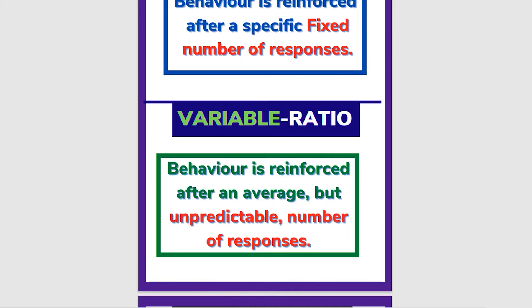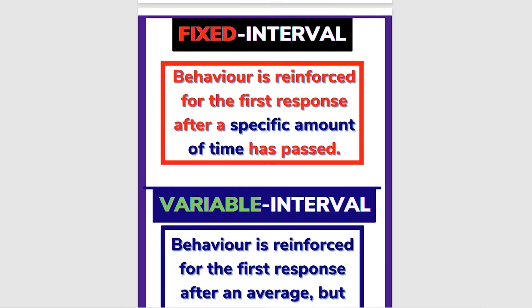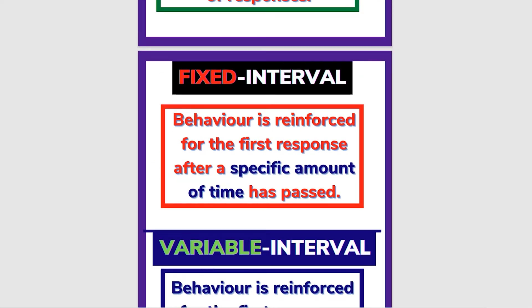If we are using the variable ratio schedule, we will give rewards unpredictably. For example with a dog, we give a reward sometimes on the 2nd response, sometimes on the 3rd — it varies. The next schedule is the fixed interval schedule, which is based on a time interval.